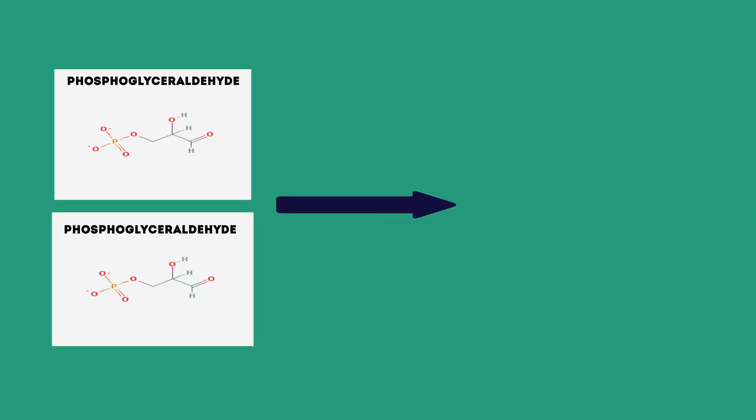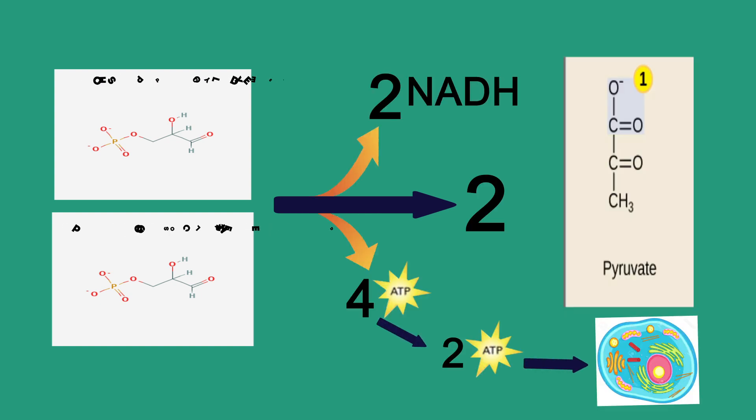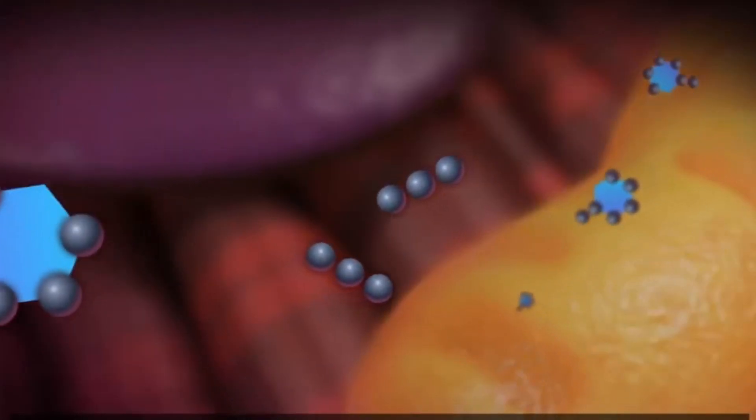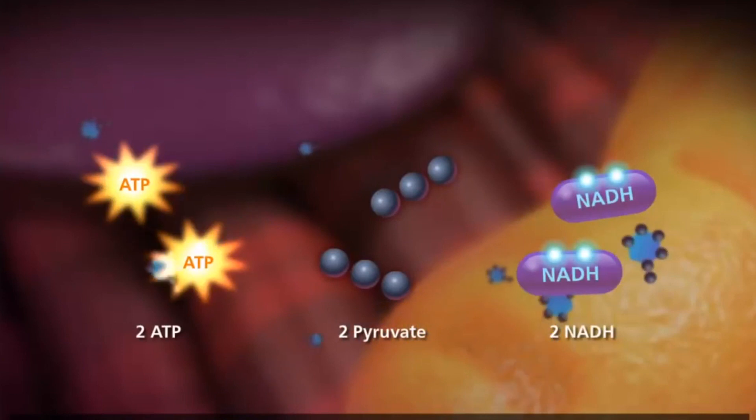2 PGA is oxidized into two pyruvate and produces 4 ATP, 2 NADH. 2 ATP is returned to the cell. The final products of this process are 2 ATP, 2 pyruvate, and 2 NADH.